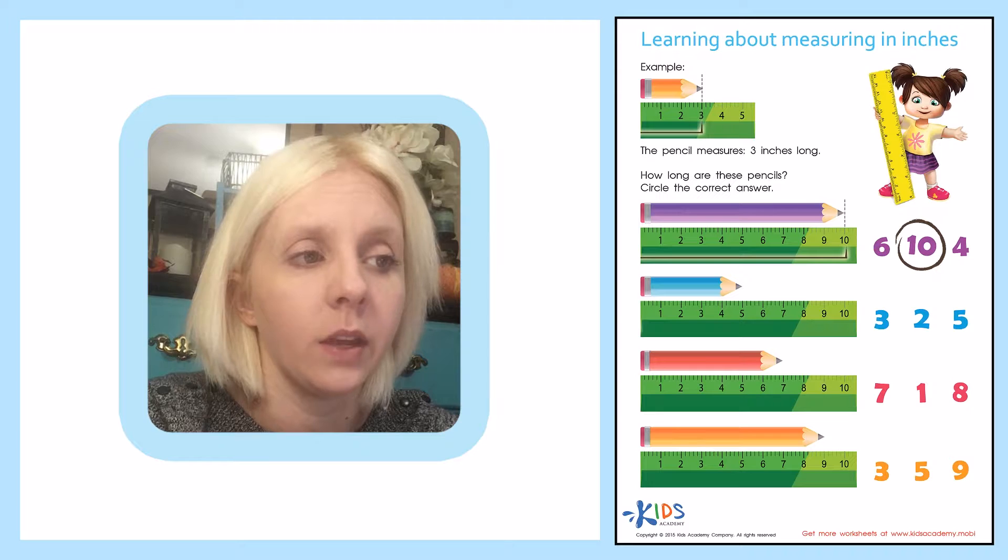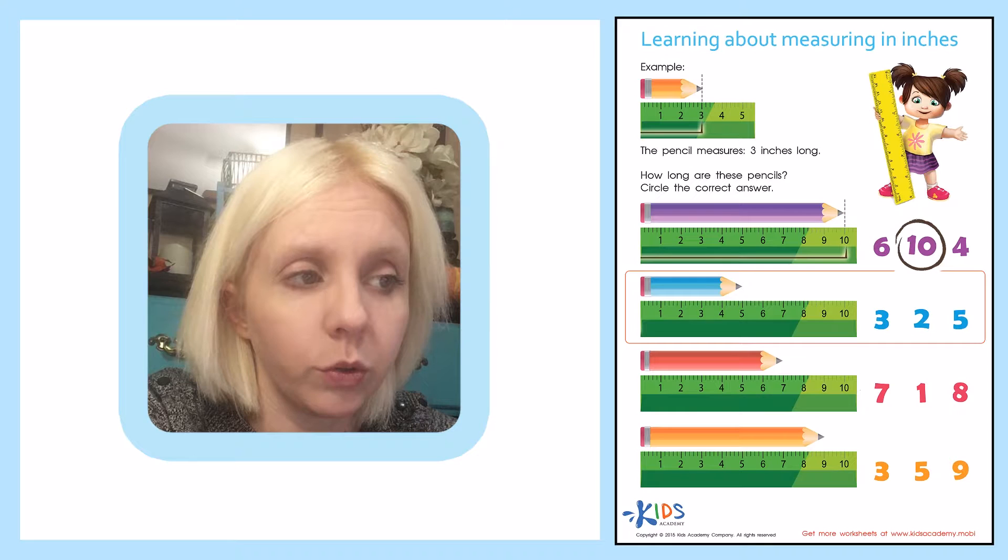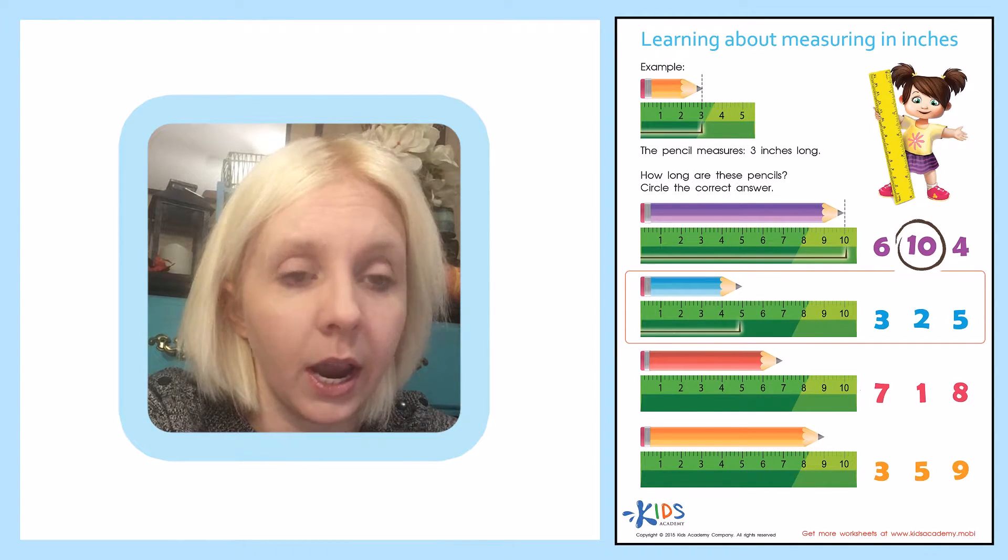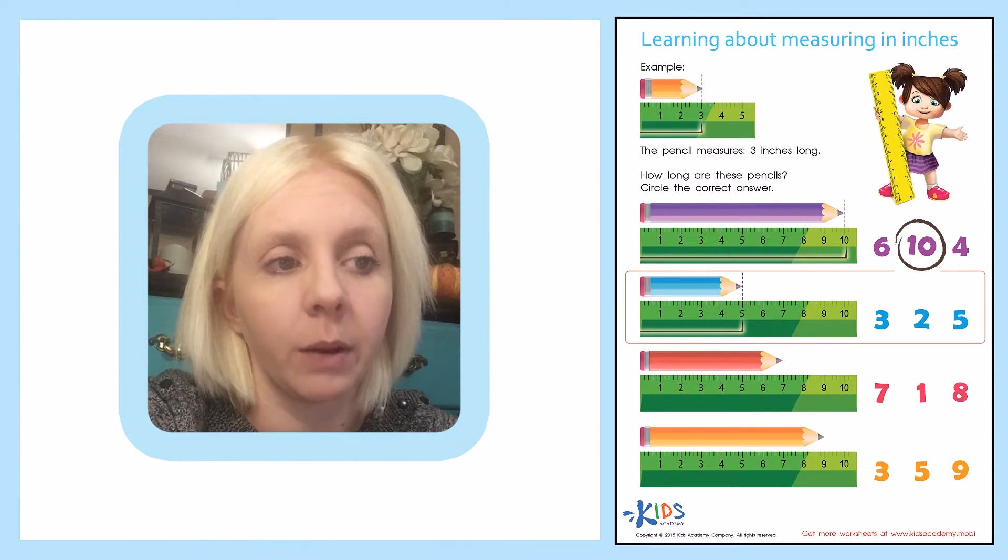And then I'm going to go over here to the next one. I've got my blue pencil. My blue pencil goes to what number here? It stops right here. And what number is that? Yeah, the number five right here. So I'm going to come over here and I'm going to circle the number five.